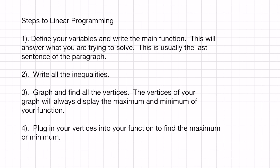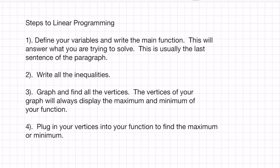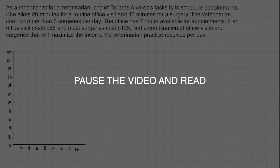Go ahead and write these notes down because if you don't, you might get lost and paralyzed — if you have no game plan, it is game over. Number one: define your variables and write the main function. Number two: write all the inequalities. Number three: start graphing and find vertices. Number four: plug the vertices into your main function to answer the question.